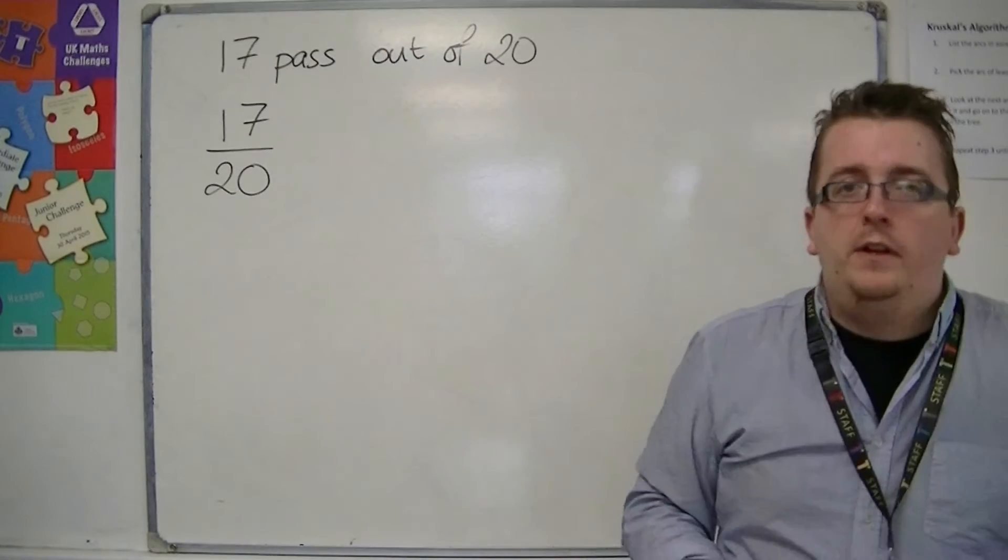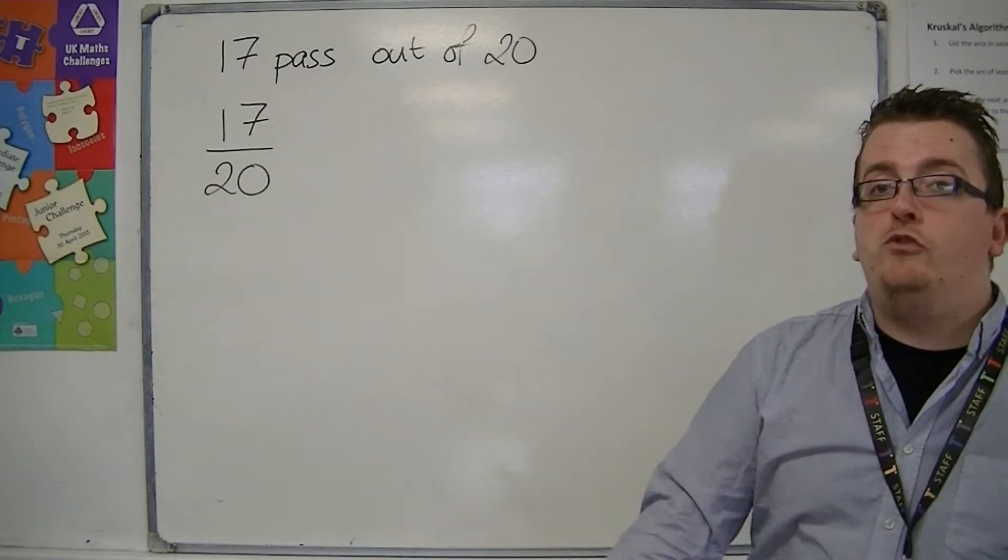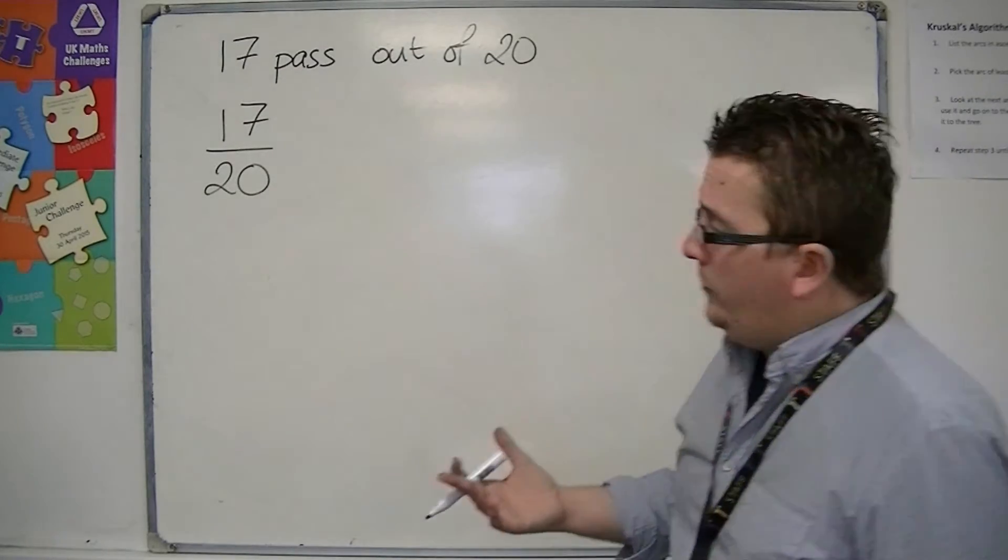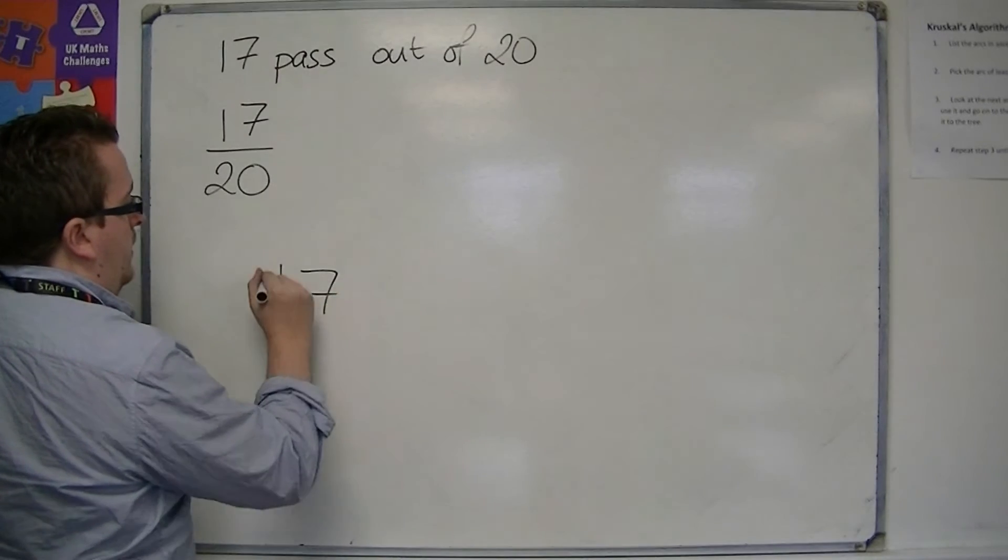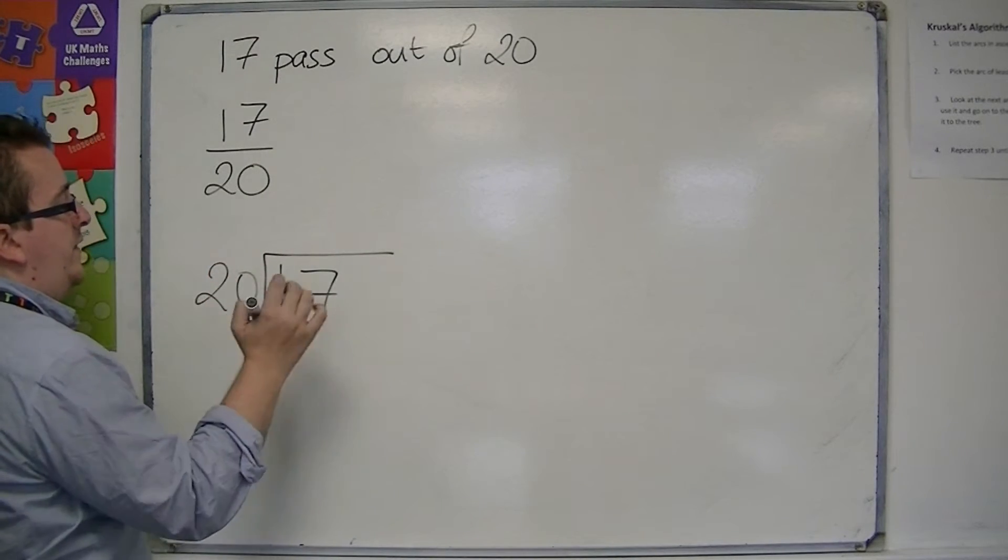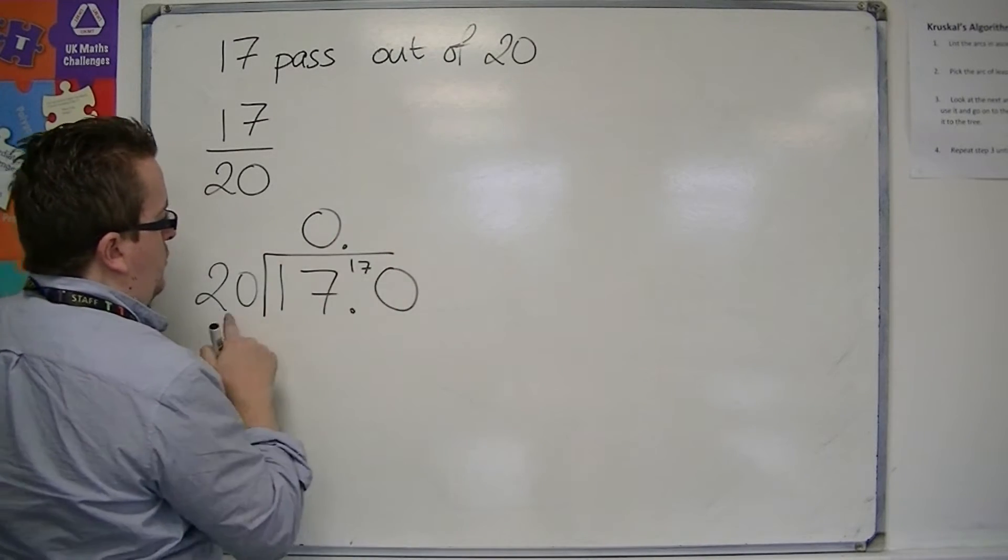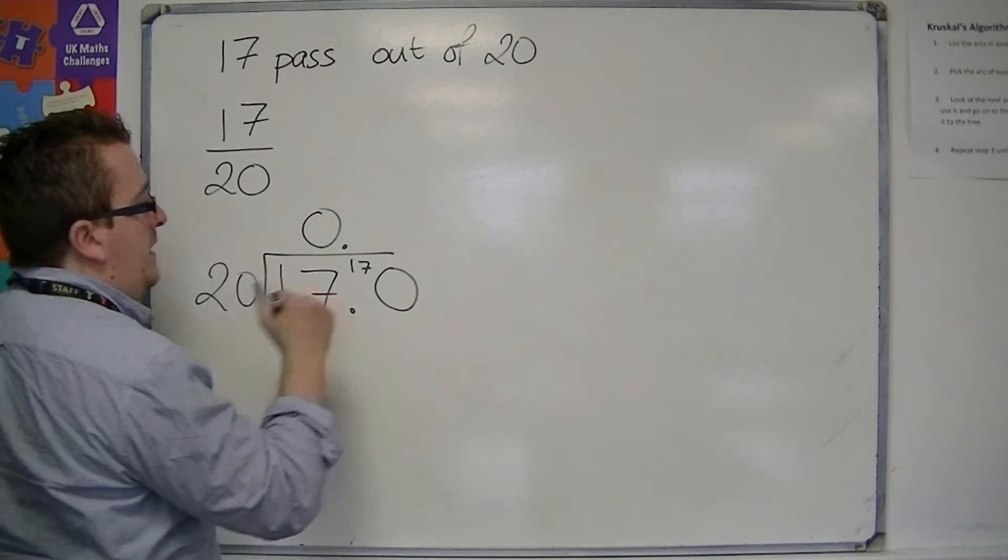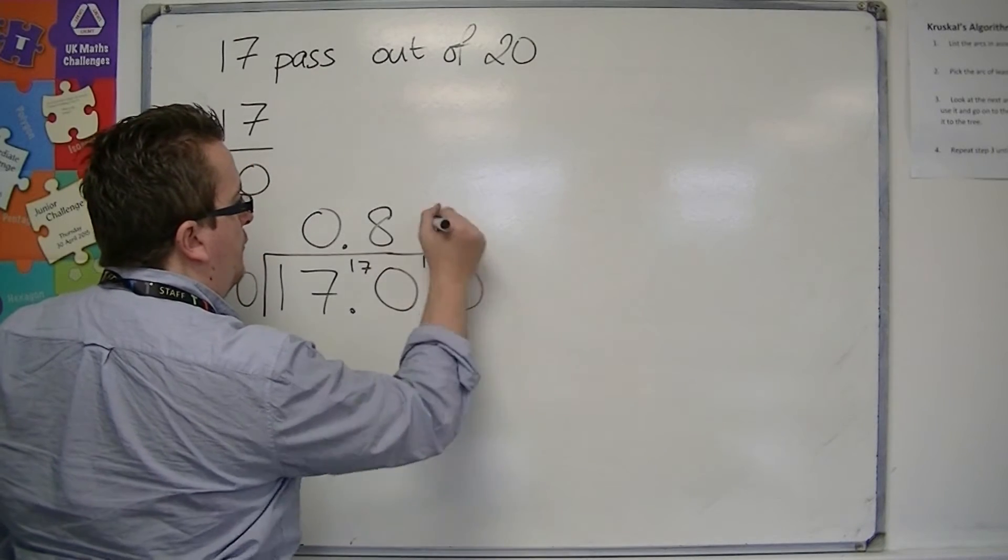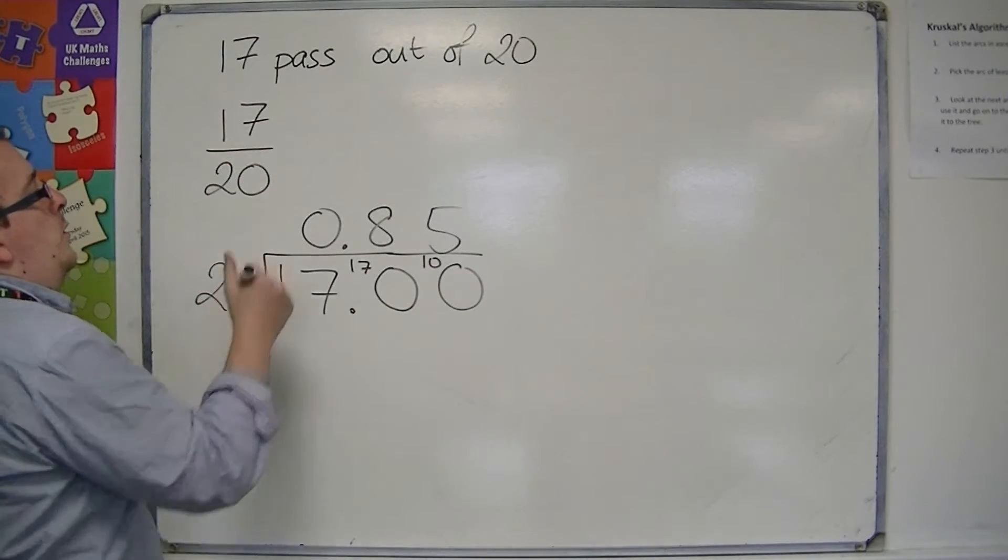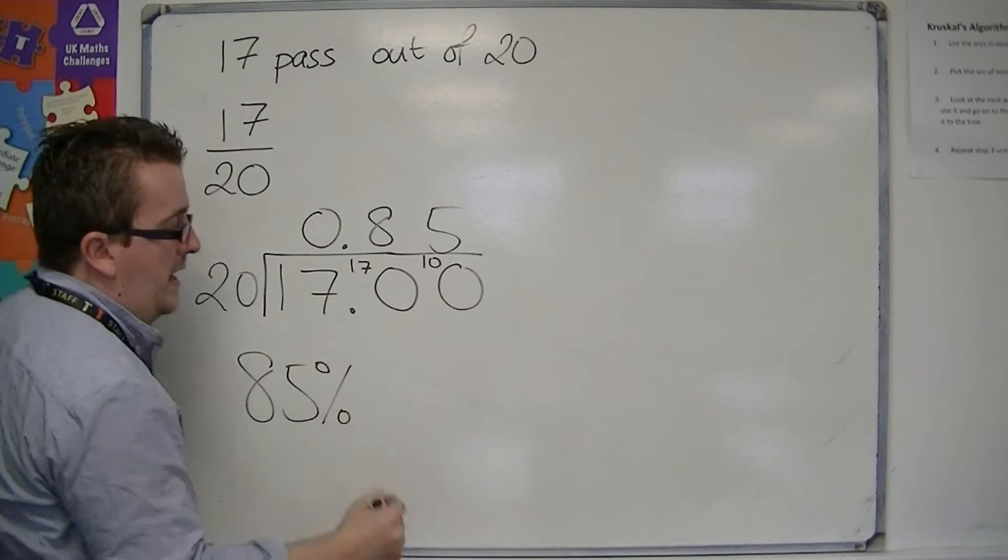Now there are a few different ways that you can convert this into a percentage. You could do it the route that I've described in the previous video where you would do the top divided by the bottom. So 17 divided by 20, so 20s into 17 goes 0 with 17 left over. So 20s into 170 go 8 with 10 left over and 20s into 100 go 5.